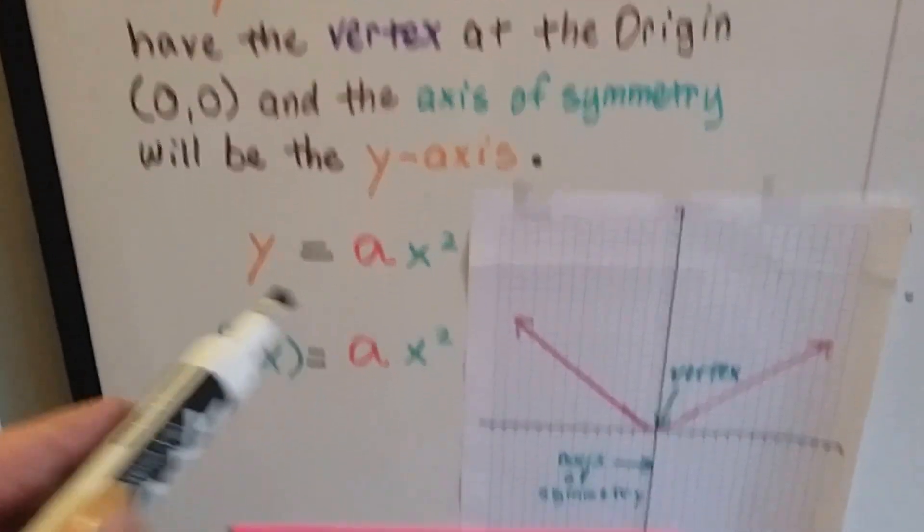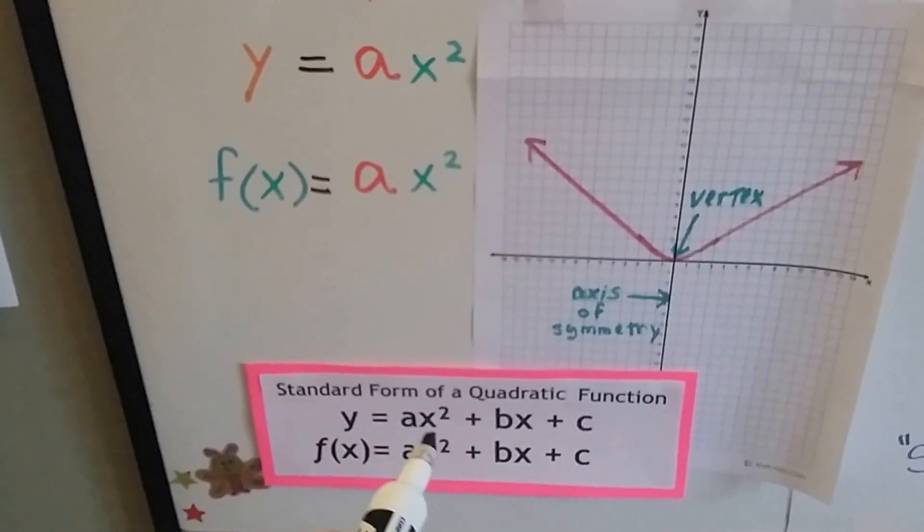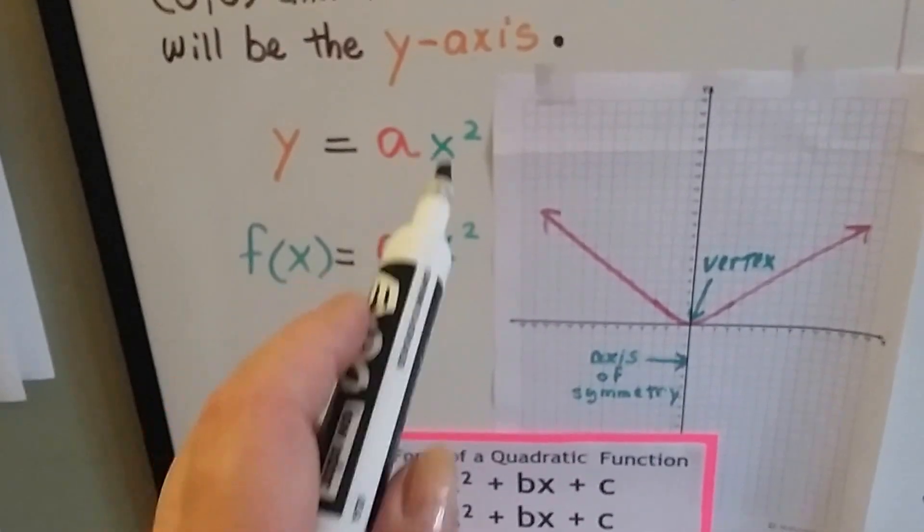And if you look at this, here's the standard form of a quadratic function. Look at it. It's got the plus bx plus c at the end. This doesn't. It's just a short little baby version of it, isn't it?